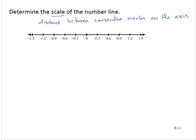So if we look at this distance from 0 to 0.3, that's 0.3. If we look at the distance from 0.3 to 0.6, that distance is 0.3. If we look at the distance from negative 1.2 to negative 0.9, that distance is 0.3. So therefore, we would say that this axis has a scale of 0.3.